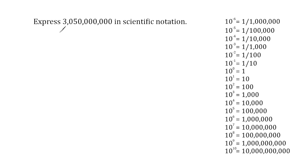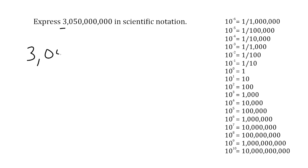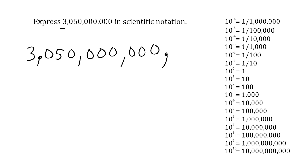Now we have to express 3 billion 50 million in scientific notation. Because our greatest place value is in the billions place, we are going to have 10 to the ninth power in our answer. Normally you won't have a reference list, but you can always write one out — it's just here for a better understanding of scientific notation. If you didn't have the list, you would simply take your number in standard form, place a decimal at the end if there isn't one, and move it to the correct location.